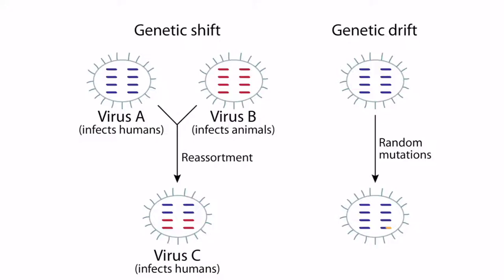Before we discuss more of the image, let's take a step back to explain the next ideas conceptually. Influenza viruses exhibit what's known as genetic shift and genetic drift. Virus A has eight segments of blue-colored RNA strands, whereas virus B has eight red-colored RNA strands — the two genomes are drastically different and produce different versions of hemagglutinin and neuraminidase. Virus A infects humans, whereas virus B infects animals such as birds or pigs. Occasionally these two drastically different viruses can infect the same cell and exchange genetic information, which is known as reassortment.